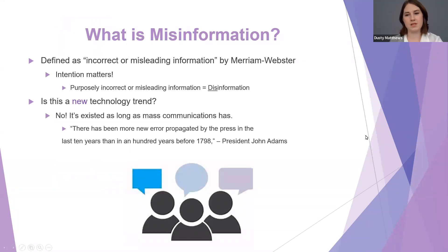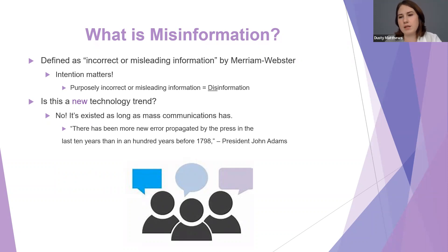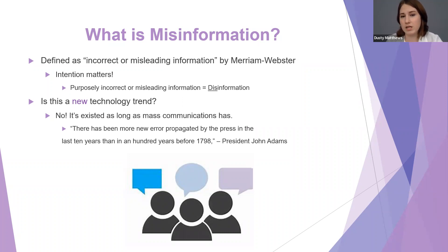What is misinformation? This has been a buzzy word lately, so we'll start by defining it. It's defined by Merriam-Webster as incorrect or misleading information. It's important to note that intention matters — someone perpetuating information that is purposely incorrect or misleading would be perpetrating disinformation. So 'dis' and 'mis' are not interchangeable.